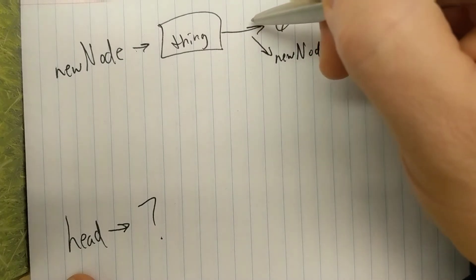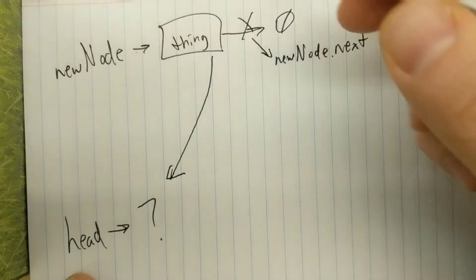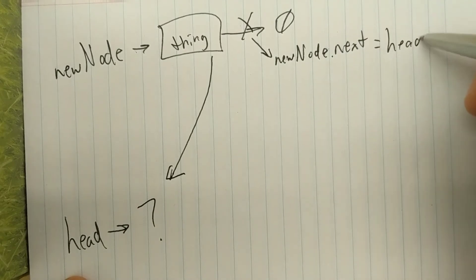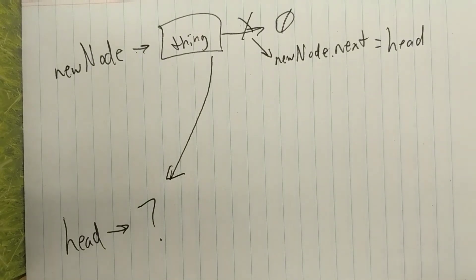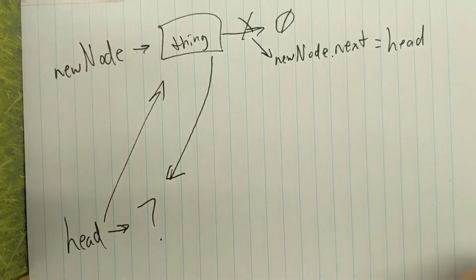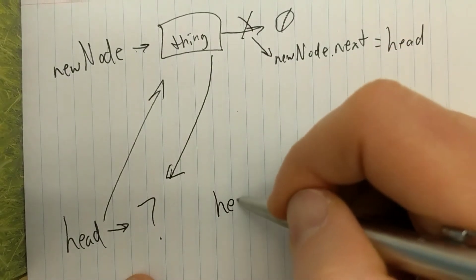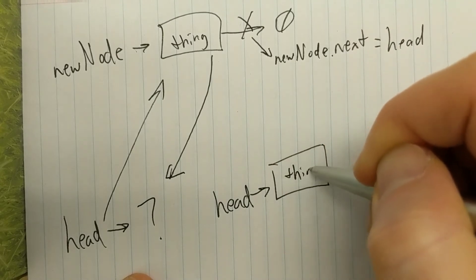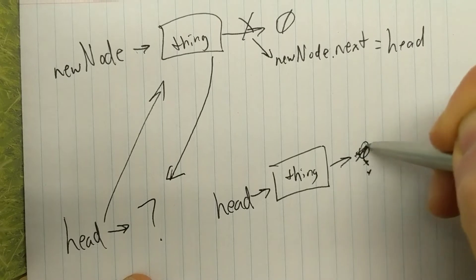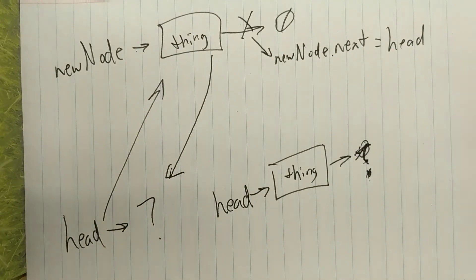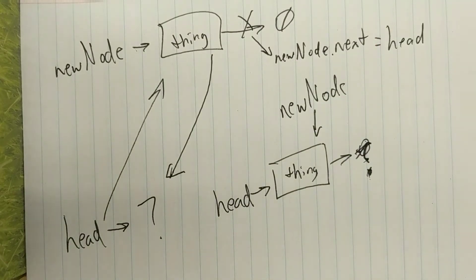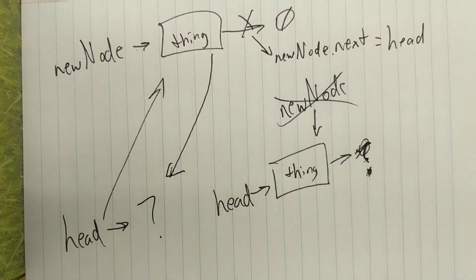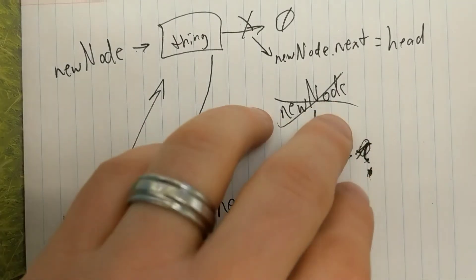To attach the new node, we set new node dot next equal to head. We also need head to point to the top of the stack, so we set head equal to new node. Once the push method is done, the new node variable goes out of scope and disappears. We're left with a stack where head points to the new thing, which points to whatever was there before.